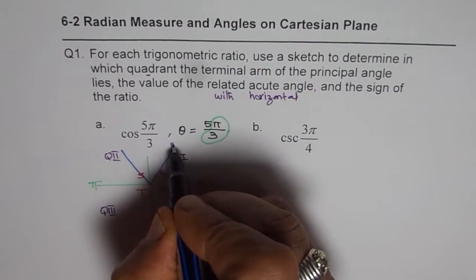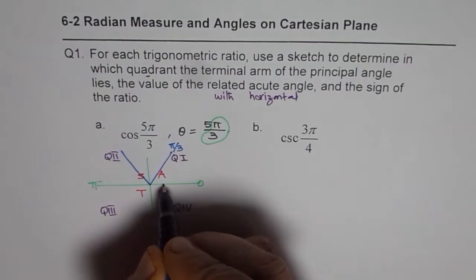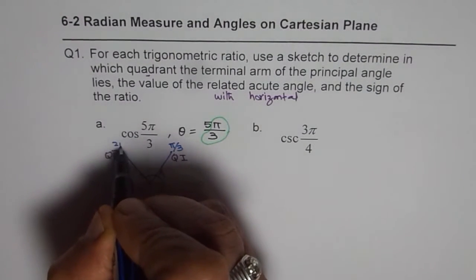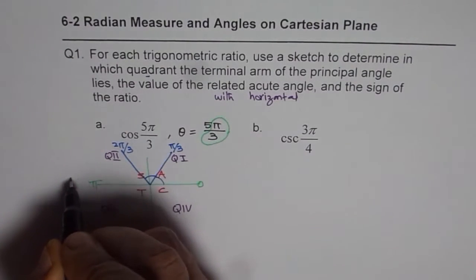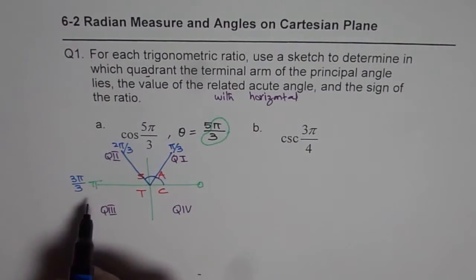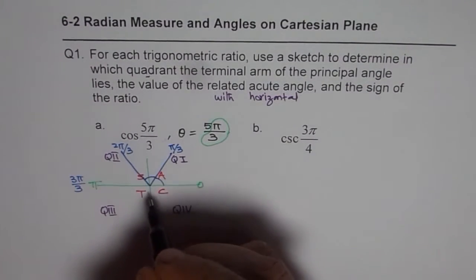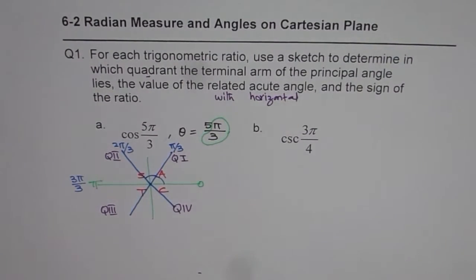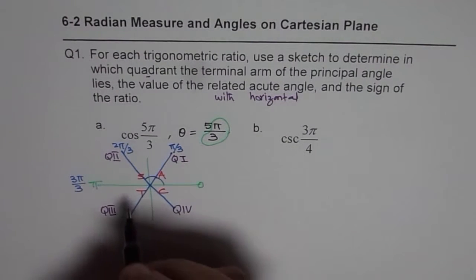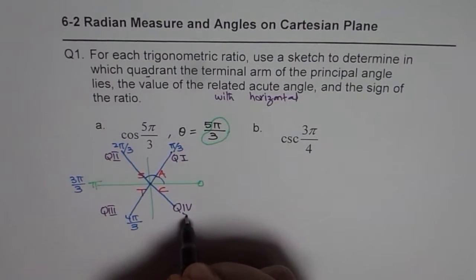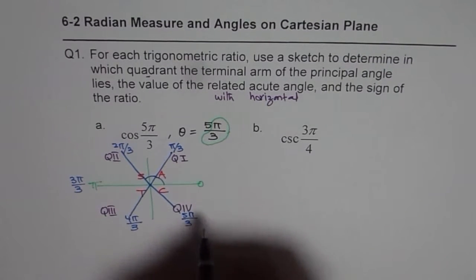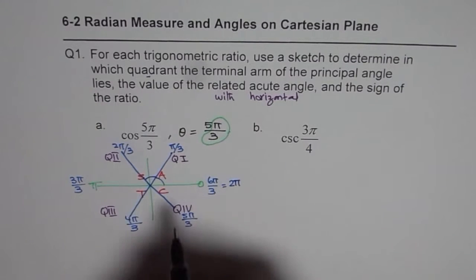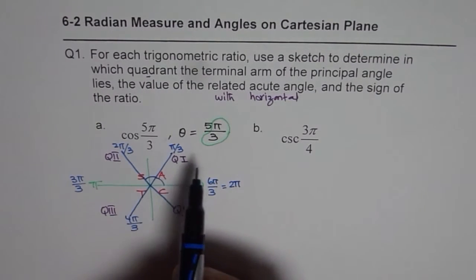So from here to here is pi by three. Then add another pi by three to get two pi by three, then three pi by three, which equals pi. Now we need five pi by three, so we divide the lower half also into three equal parts: four pi by three, five pi by three. Then six pi by three equals two pi — a full circle divided into six parts.